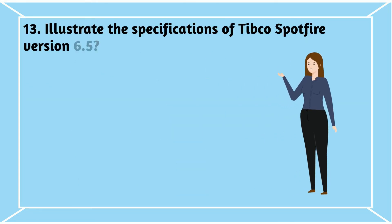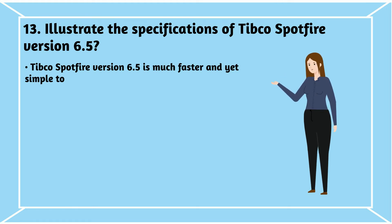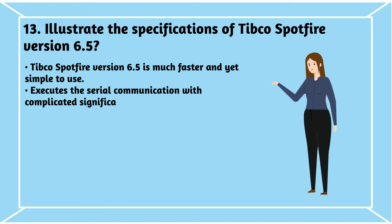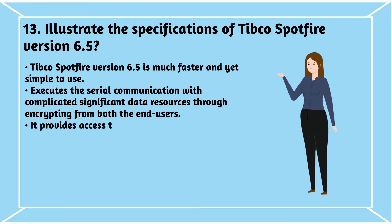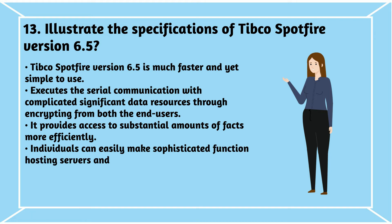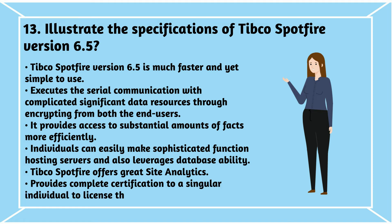Question 13: What are the specifications of TIBCO Spotfire version 6.5? TIBCO Spotfire version 6.5 is faster and simpler to use. It executes serial communication with complex significant data resources through encrypting from both end users and provides access to substantial amounts of data more efficiently. Individuals can make sophisticated function hosting servers and leverage database ability. TIBCO Spotfire offers great site analytics and provides certification to a singular individual to license the Spotfire desktop.